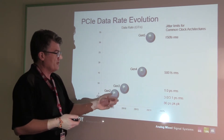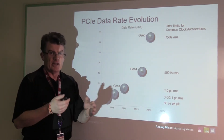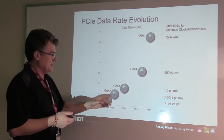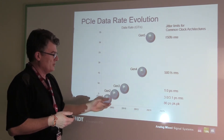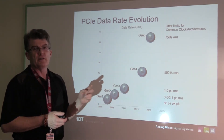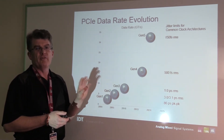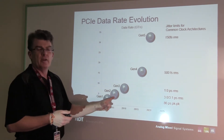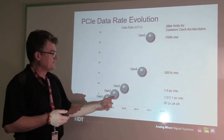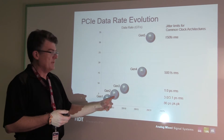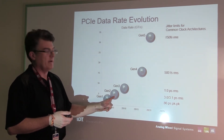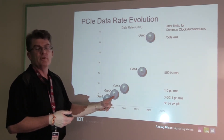Gen 3 went to 8 gig, and that does not look like a doubling. But what it actually was is that the original two generations used something called 4B/5B encoding, which meant that this 5 gigabit data rate, because of the 4B/5B encoding for the error correction, only was doing 4 gigabits of data.